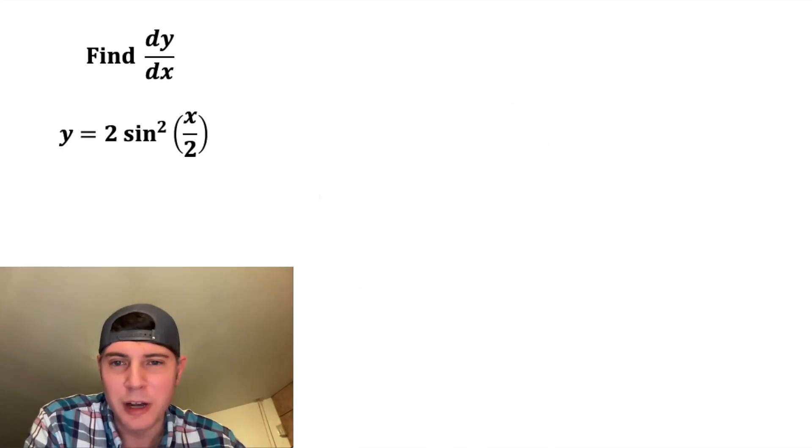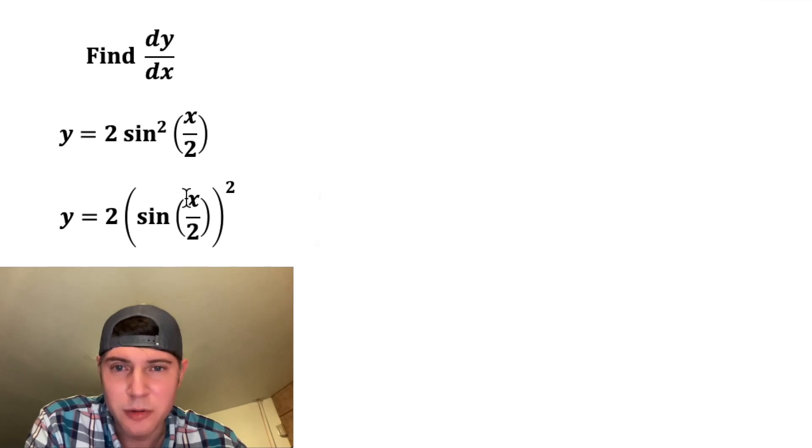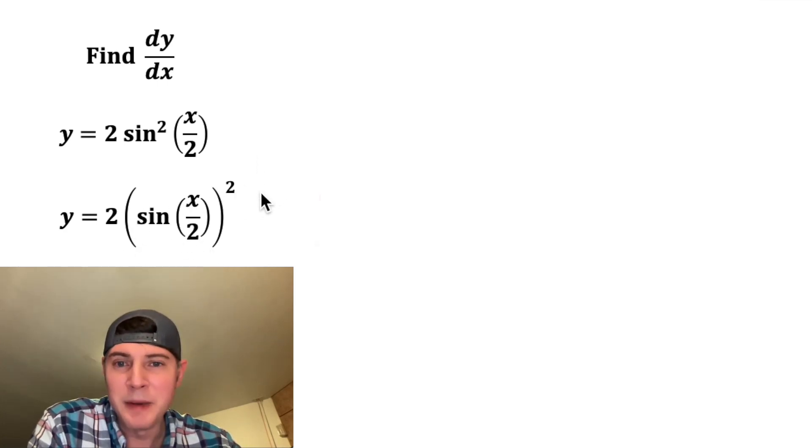First step, in order to use chain rule, I'm going to rewrite this like this. I'm going to put the sine of x over 2 inside parentheses and square that. It means the exact same thing as this step, but it's going to make using chain rule a little bit easier for me.